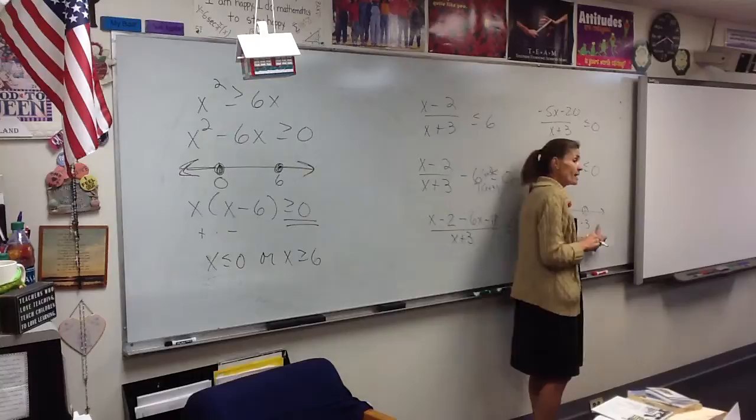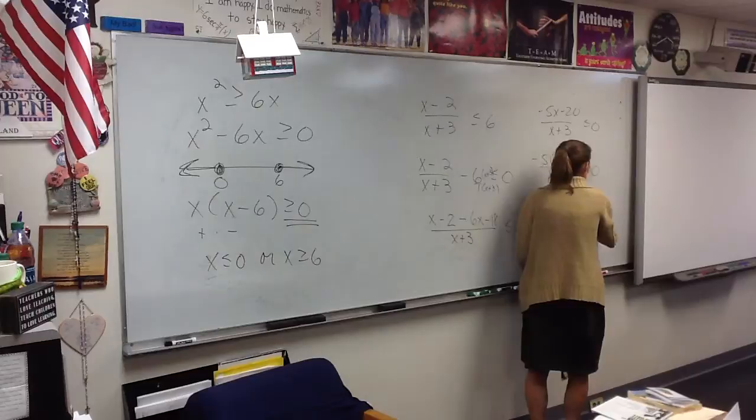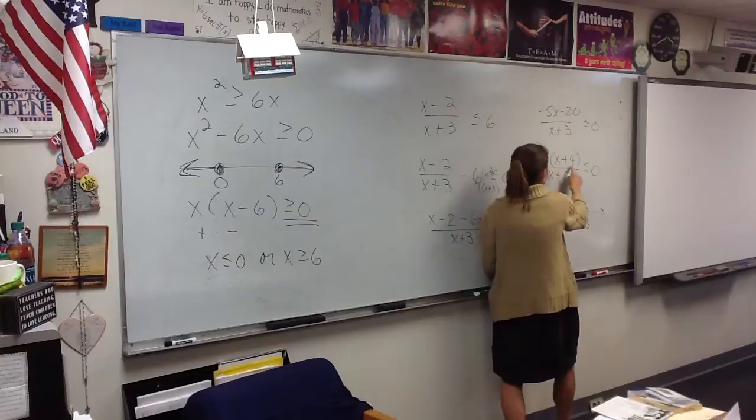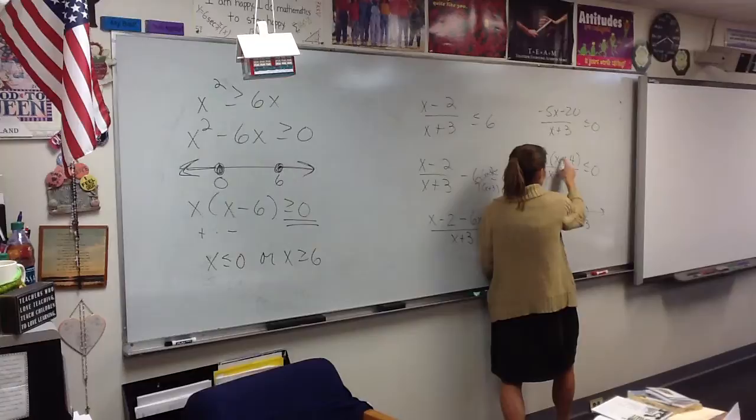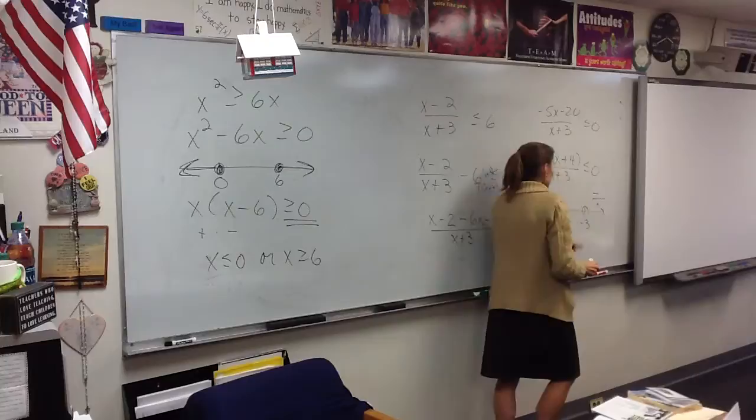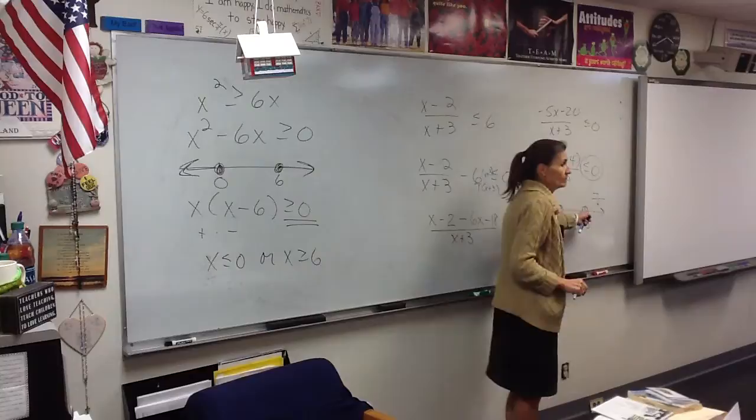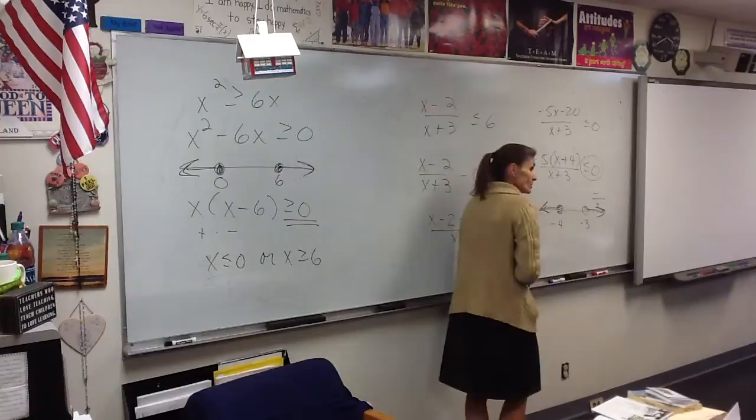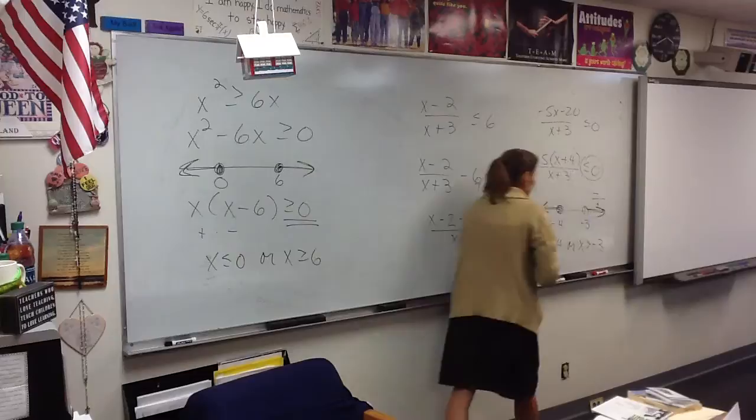Speaking of 0, can I use 0 now as a test point? Yeah. 0 is out here. So if I put 0 in. Okay, now be careful. If I put 0 in, will my top be positive or negative? If you put a 0 in, it's negative. And the bottom, if you put a 0 in, is positive. Is negative over positive less than 0? Yes. So that works, which means that works. And our answer is less than or equal to negative 4 or greater than negative 3.